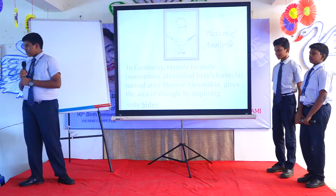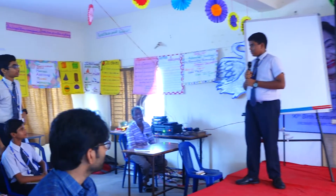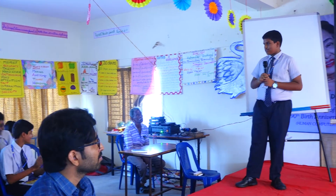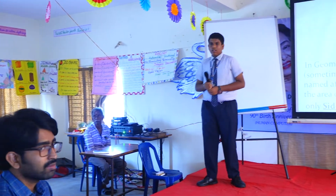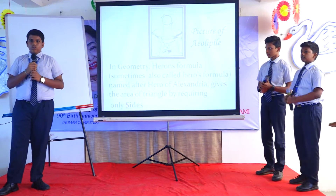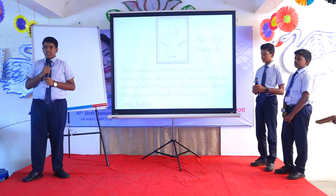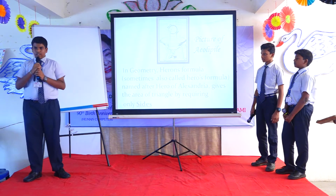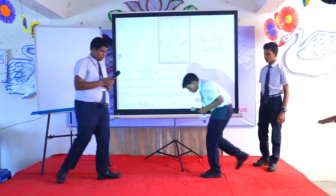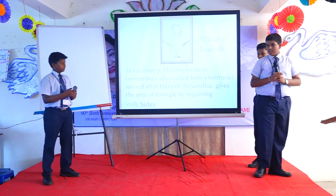And now comes the main part — he derived one of the most important formulas in mathematics: Heron's formula. Can anybody guess what it is? Yes, it's correct! Give a round of applause. The formula is: Area equals the square root of S times (S minus A) times (S minus B) times (S minus C).